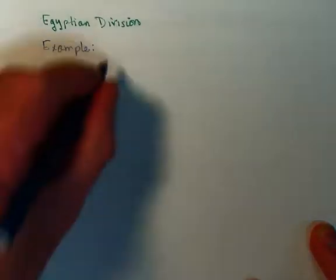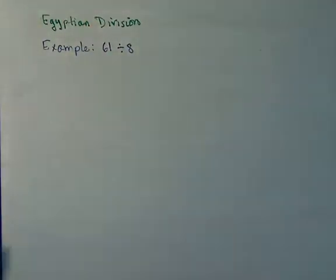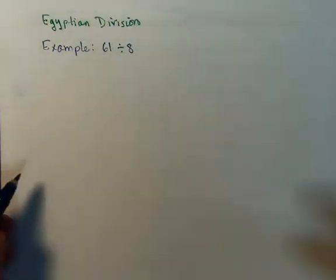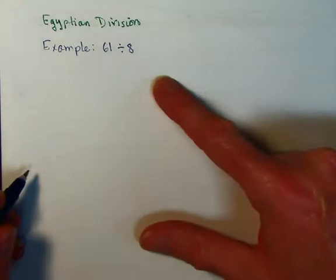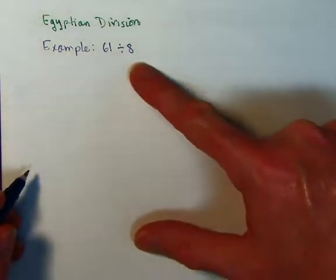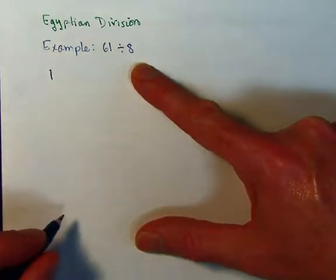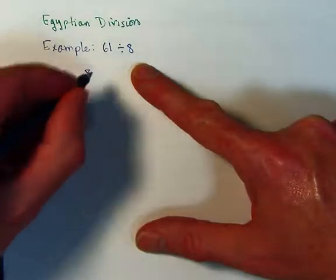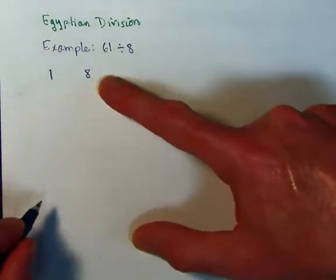Let's look at a quick example here. We are going to take 61 and divide that by 8. This process also involves making a little table with two columns. Now, the order here matters. Of course, multiplication is commutative, you could switch things around, but division is not. So you've got to use the dividend in the right-hand column. We're going to start, as with multiplication, with a 1 in the left-hand column. And we have to put the divisor, this 8, in the right-hand column.